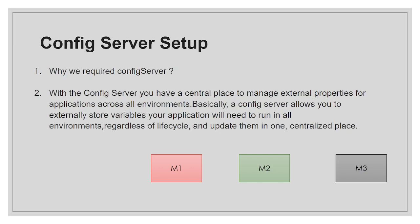Why exactly do we need a config server? In the microservices space, suppose we have three microservices: M1, M2, and M3. For each microservice, we have environment-specific property files — application-dev.properties, application-qa.properties, application-staging, UAT, prod — and those properties files contain application-specific configurations.